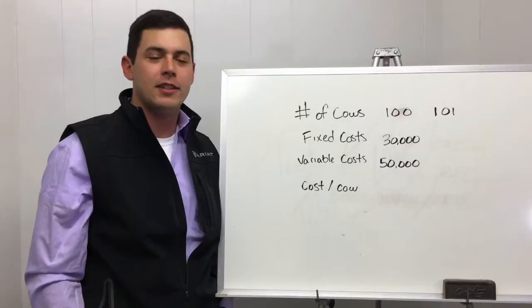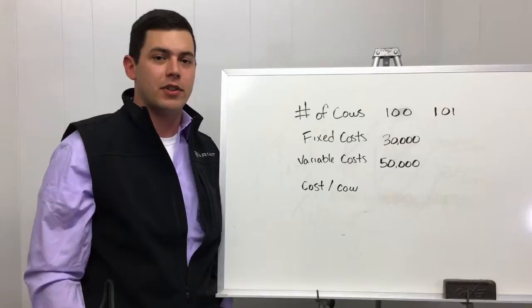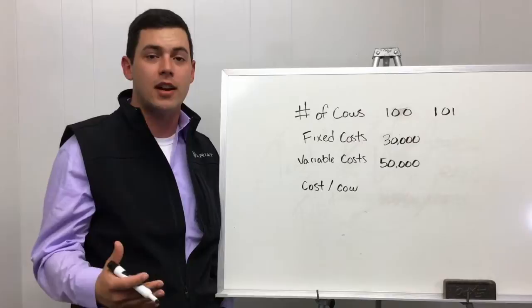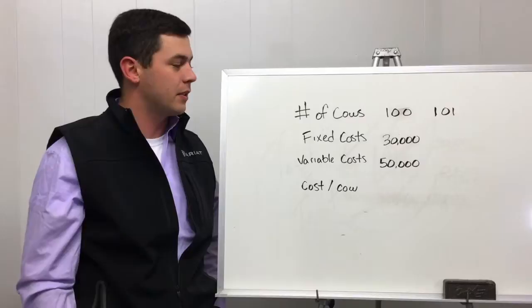Before we can start figuring out whether we're in the red or the black, I think it's important to consider things such as depreciation and fixed costs and how you can help defray those costs across your operation. We've got an example here from Clay Mathis with the King Ranch Institute that I'm going to break down and show you.